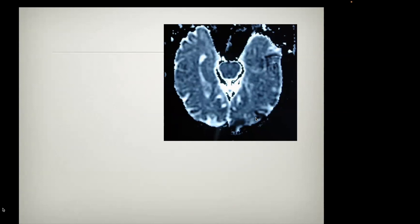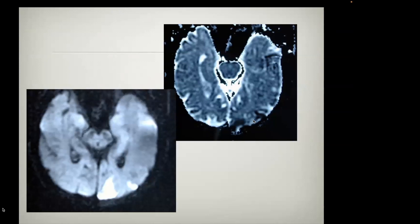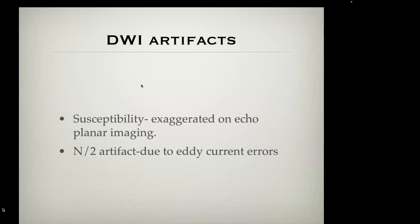The two common artifacts on diffusion-weighted imaging are susceptibility artifacts, which are exaggerated on echoplanar imaging, and the N2 or Nyquist artifact, which is due to eddy current errors during the scan. The Nyquist artifact looks like three heads stacked on top of each other. Depending on your scanner, you may never see it or see it all the time — it can be corrected with hardware manipulation. Susceptibility artifacts occur at air-bone-brain interfaces, such as the inferior frontal lobes adjacent to the sphenoid sinuses, and also along the petrous ridges.